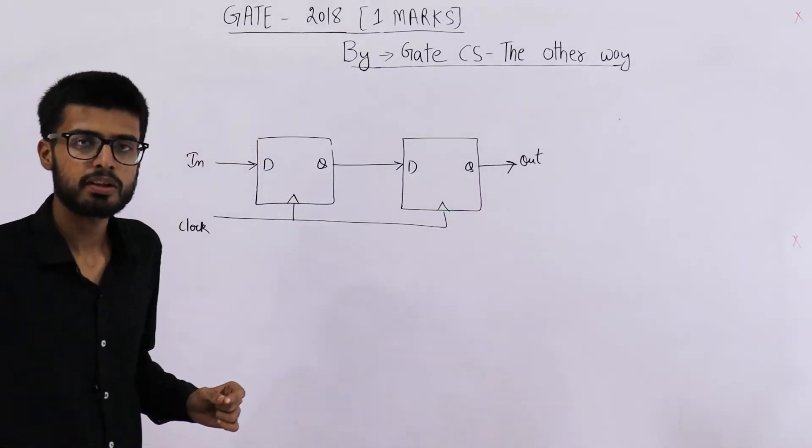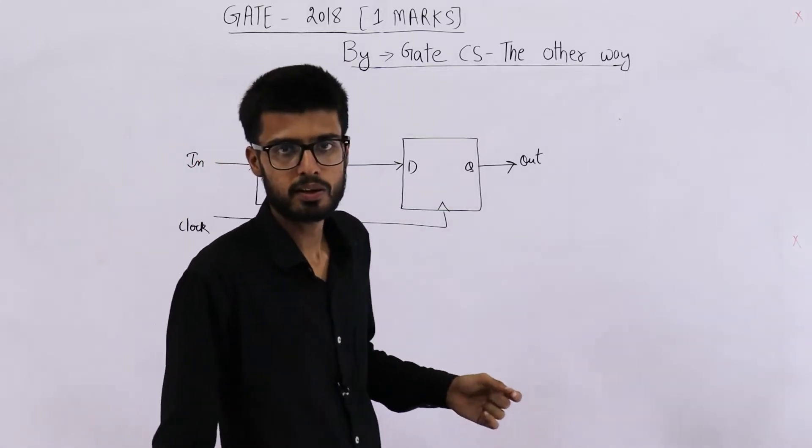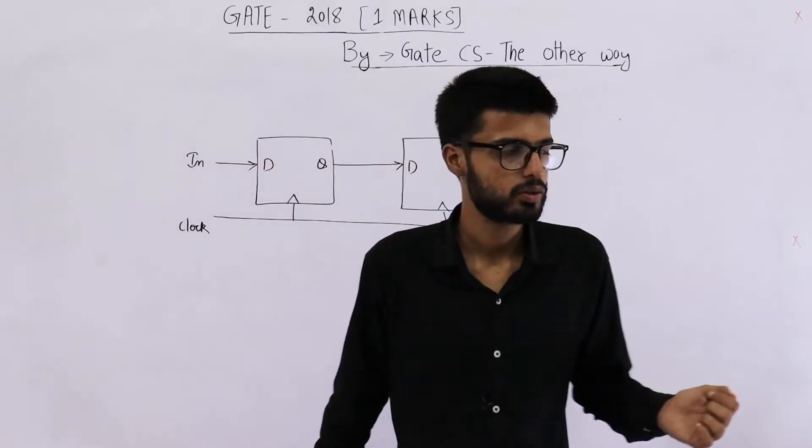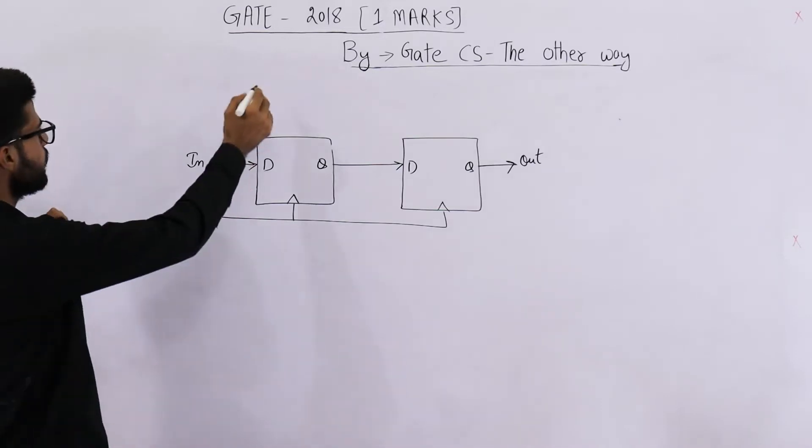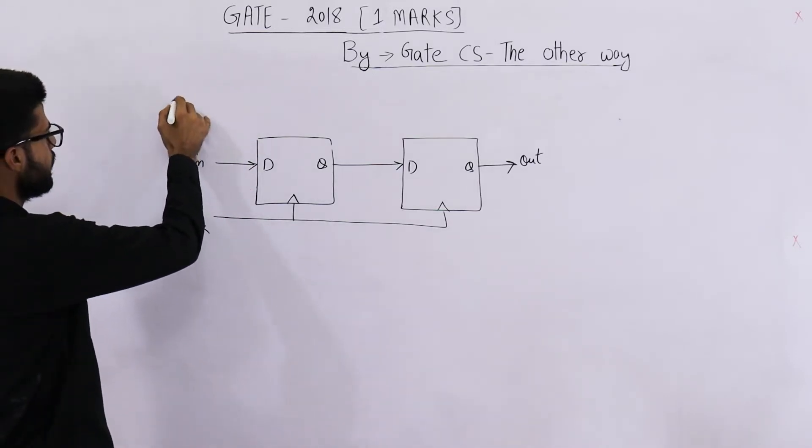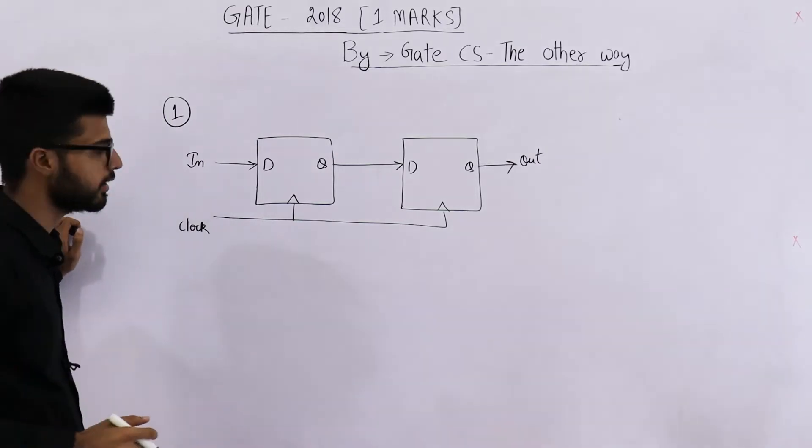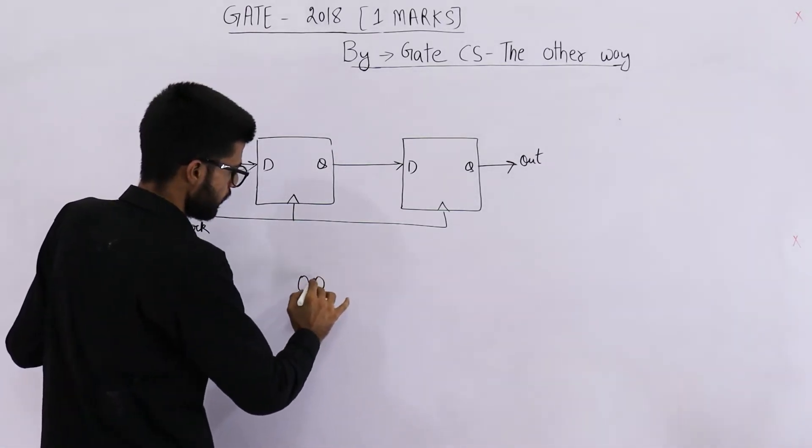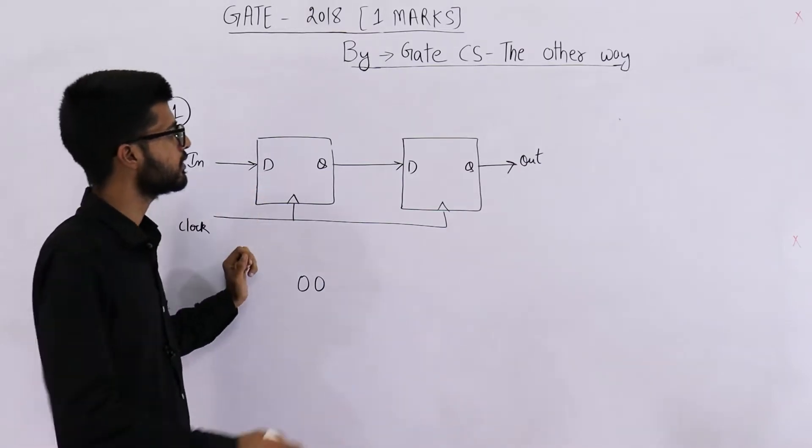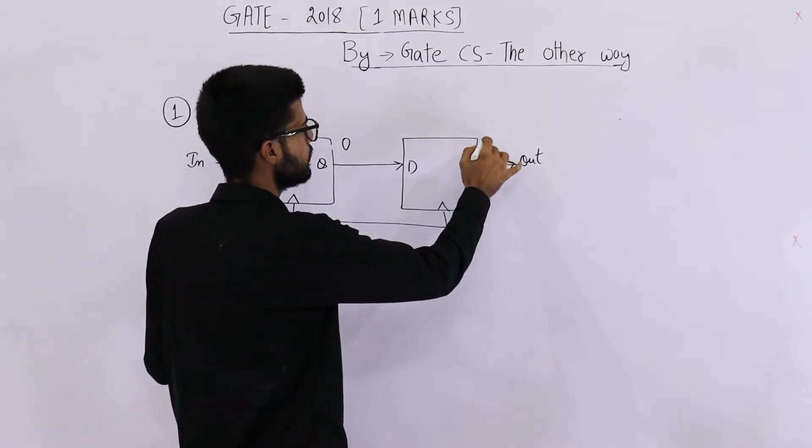Now for solving this question, we don't actually need to draw the state transition diagram. We can solve it without the diagram also. Suppose this value of in is 1. Let us first analyze for value of in is equal to 1. Whenever the state of counter is 0, 0.